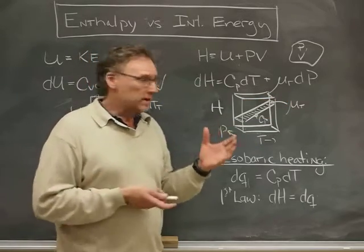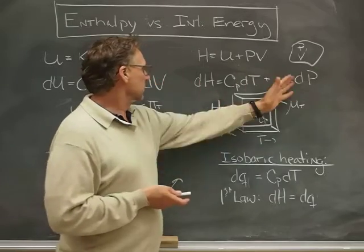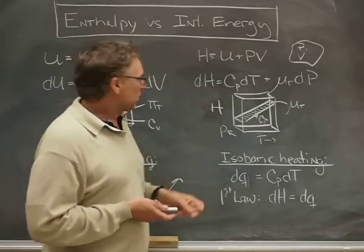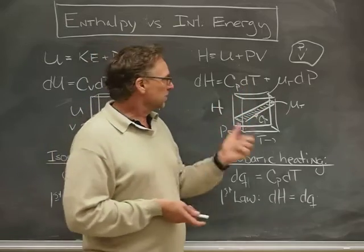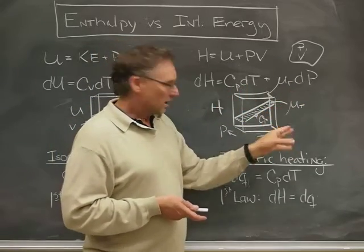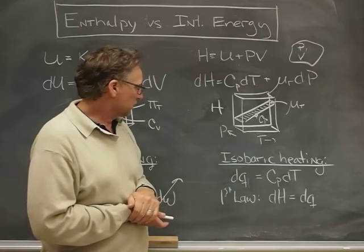We also write a differential equation of state pretty similarly. Changes in the enthalpy are given by changes in the temperature times Cp, that slope, plus changes in the pressure times the isothermal Joule-Thomson coefficient.